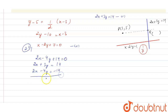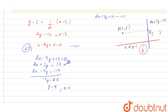Subtracting the equations, we get 7y = 28, so y = 4. Substituting y = 4 back into one of the equations gives x = 1. So the coordinate of point Q, where the parallel line intersects the line 2x + 3y = 14, is Q = (1, 4).